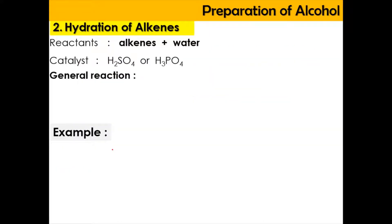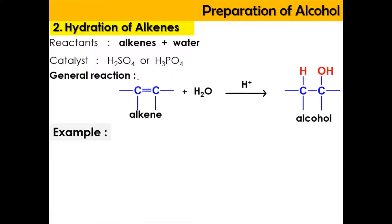The second preparation of alcohol is via hydration of alkene. The reactant is alkene reacted with water. The catalyst involved is an acidic catalyst, which can be sulfuric acid or phosphoric acid. For the general reaction, when alkene is reacted with water under acidified conditions, we're going to produce an alcohol.